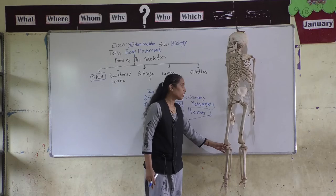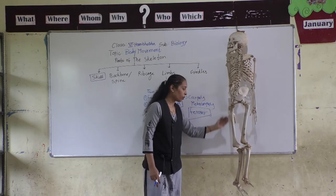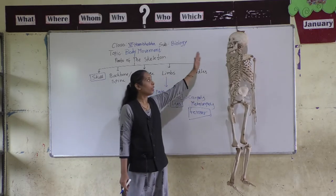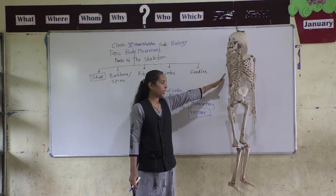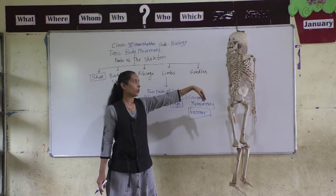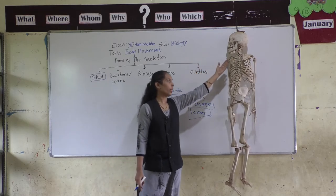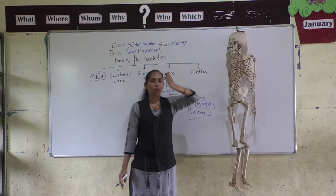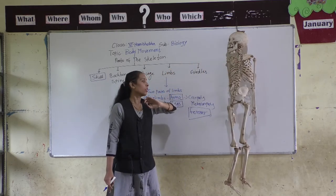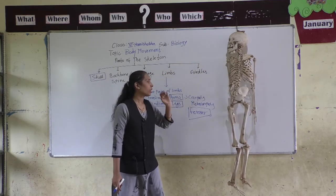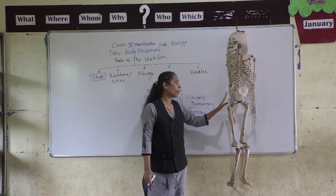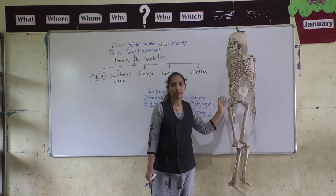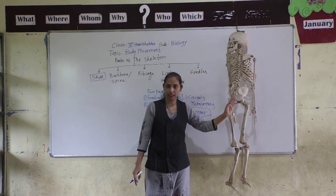The forelimbs are connected to the backbone with the help of the shoulder girdle, while the hind limbs are connected to the backbone with the help of the pelvic girdle.